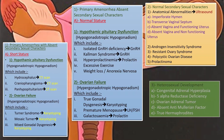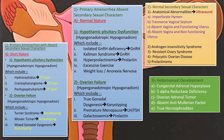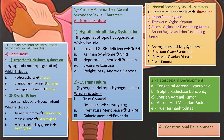Congenital adrenal hyperplasia is diagnosed by elevated 17-alpha hydroxyprogesterone; 5-alpha reductase deficiency by 5-alpha reductase level; ovarian and adrenal tumors by CT scan plus DHEA and serum testosterone levels; true hermaphrodite by gonadal biopsy; and constitutional development diagnosis is purely clinical.